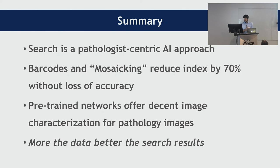In summary: search is a pathology-centric AI approach — it's an assistance to a pathologist rather than replacing them. Barcoding and mosaicing reduce the index size by 70%, which is one of its kind, without loss of accuracy. Pre-trained networks offer decent image characterization for pathology images, so we don't have to train from scratch every time. And more data means better search results, because there is a higher chance of hitting something correct with a larger dataset. Thank you.